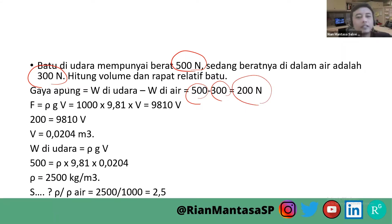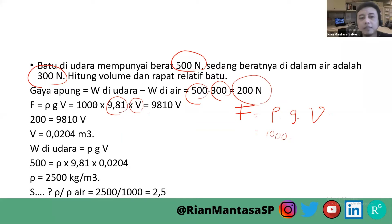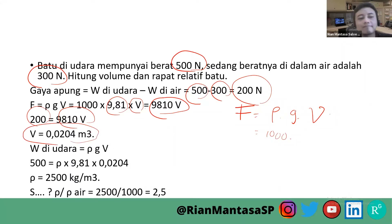Kita punya rumus juga untuk menganalisis volume. Gaya itu adalah masa jenis dikalikan gravitasi dikalikan volume. Kita biasa menggunakan masa jenis 1000, gravitasi 9,81, dengan volume yang dicari. Kita analisis menjadi 9810 dikalikan volume sama dengan 200, sehingga volume batu tadi adalah 0,0204.